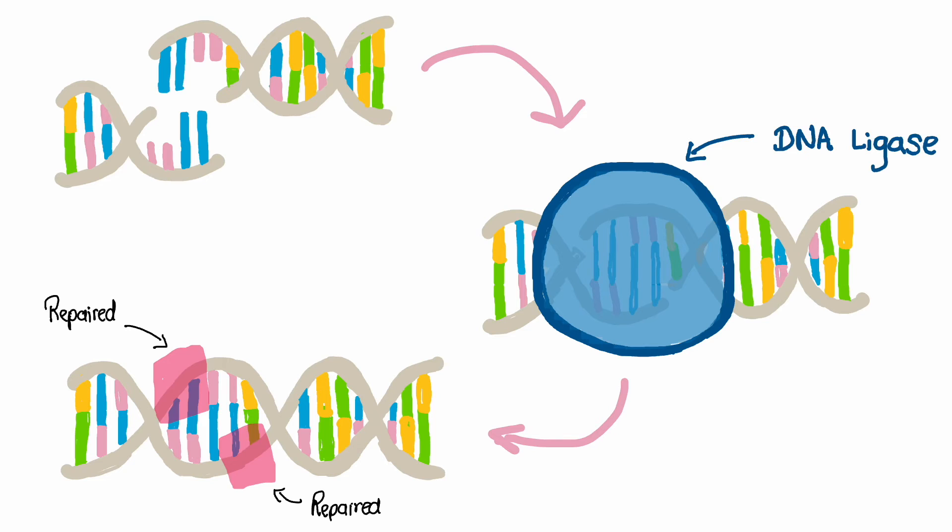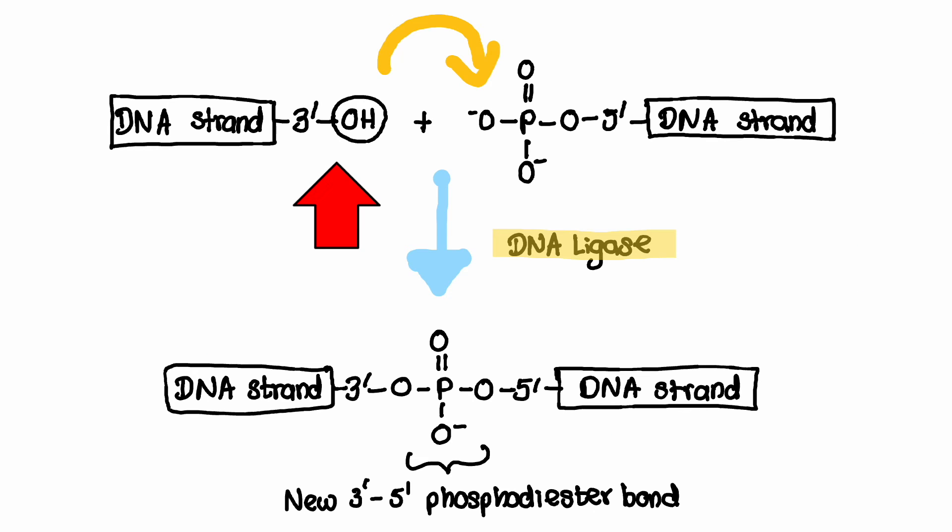The enzyme first binds to the gap in the DNA backbone. It then catalyzes the formation of the phosphodiester bond between the 3 prime hydroxyl group of one nucleotide and 5 prime phosphate group of another, thus sealing the gap.